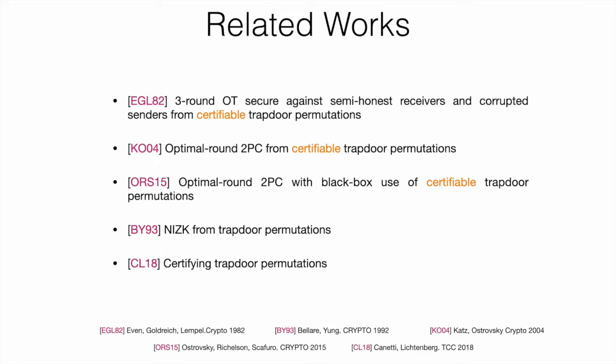So what we do in this work is to try to understand whether we can do the same for the case of oblivious transfer and, more generally, two-party computation. That is, we want to show how to obtain a round-optimal two-party computation protocol without requiring the trapdoor permutation to be certifiable.